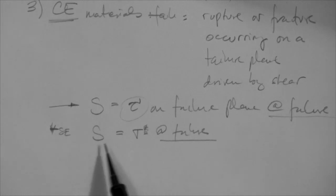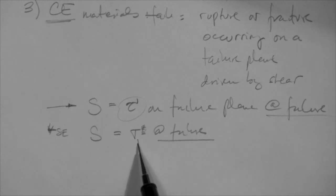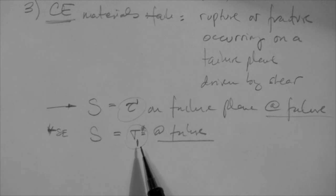In any case, this strength, as they define it, is the principal stress, major principal stress at failure, which is the vertical imposed stress at failure. This stress doesn't act on the failure plane, and it's not a shear stress. It's a normal stress.